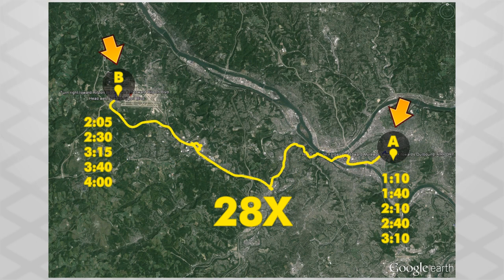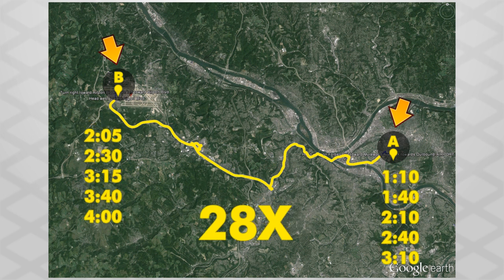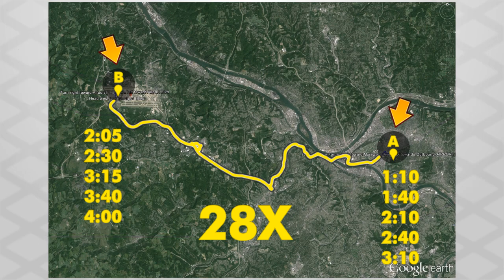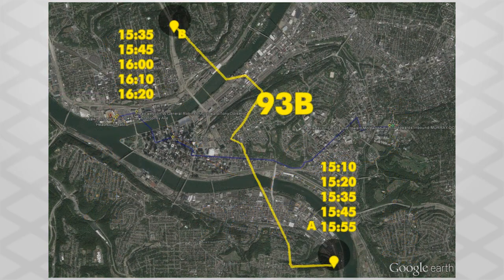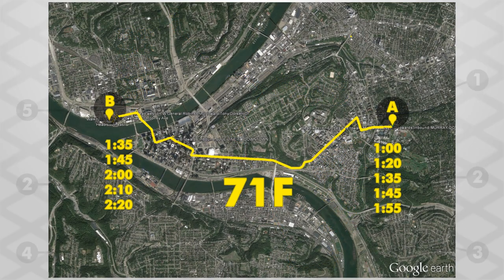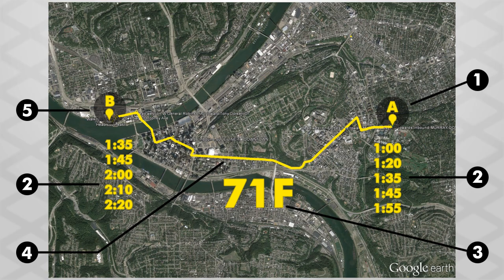These pieces of information – bus number, start, stop times, and route – are essential to the task, and are included in the abstraction. Note that even though it features only five pieces of information, those five pieces can represent many different routes, because every one of them has a start, end, route, bus number, and times.